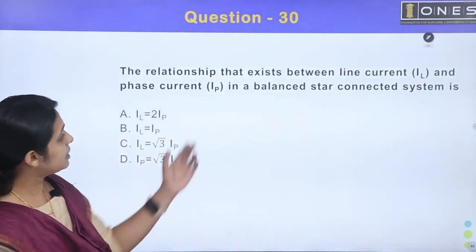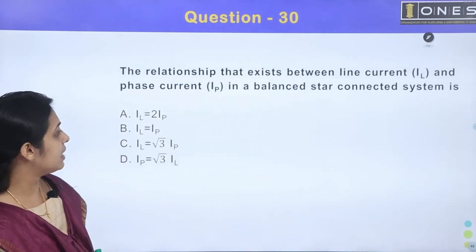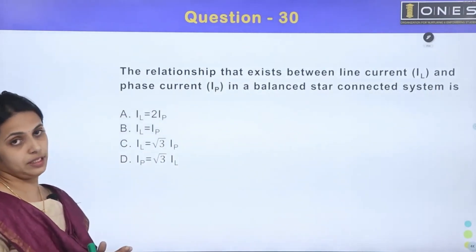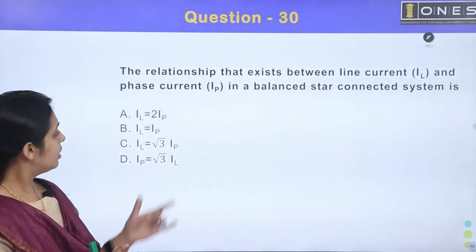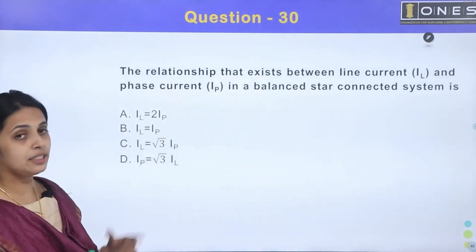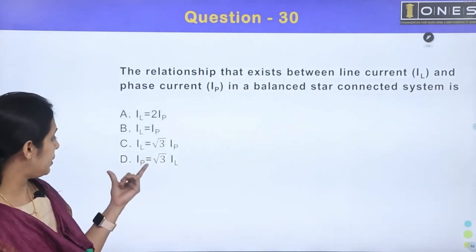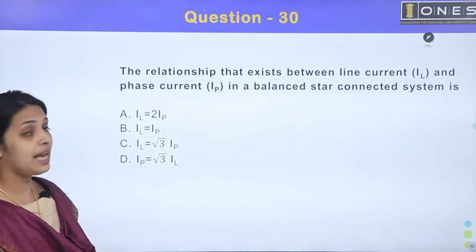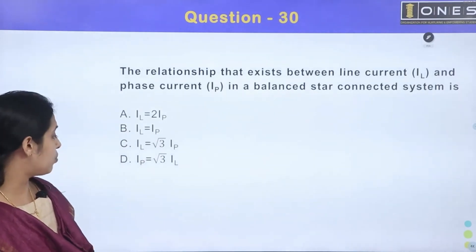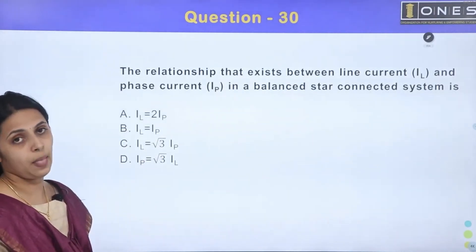Next question: the relationship that exists between line current and phase current in a balanced star-connected system — option A: IL = 2IP, option B: IL = IP, option C: IL = √3 IP, option D: IP = √3 IP.